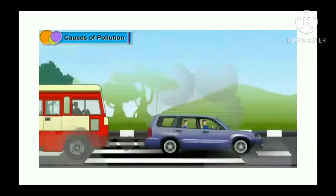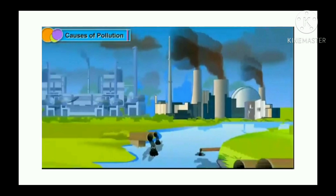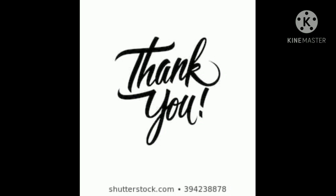Besides, when fuels are burnt in vehicles, they give out certain poisonous gases as well as smoke. Industries also let out poisonous gases into the air. This leads to air pollution on a very large scale. Poisonous gases like carbon monoxide, nitrogen dioxide, and sulfur dioxide are all mixed in the air, and this leads to air pollution on a very large scale.